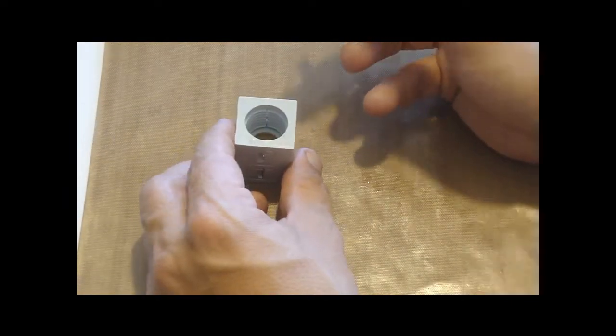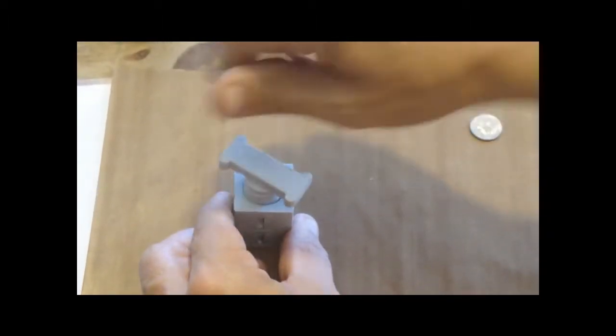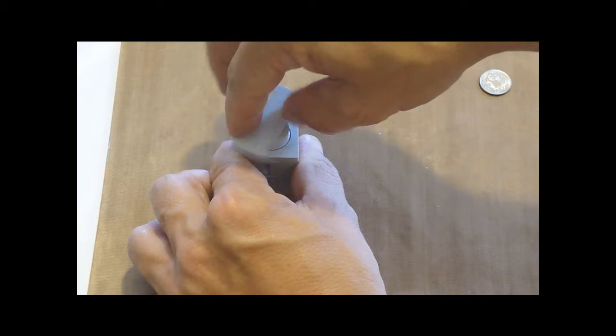So now that we have our clay loaded in there, we're going to take our threading plunger and we're going to stick it in here. We're just going to screw it in and then unscrew.